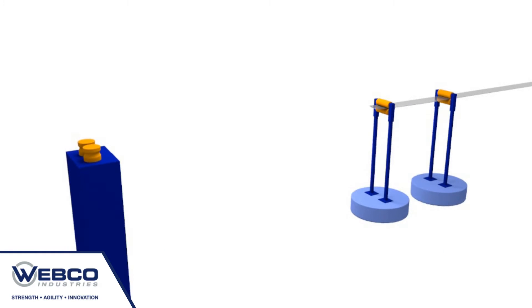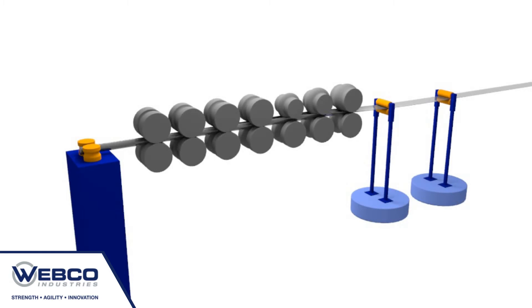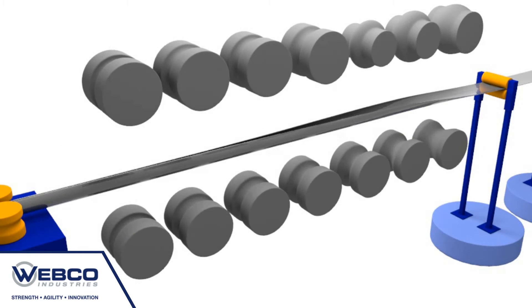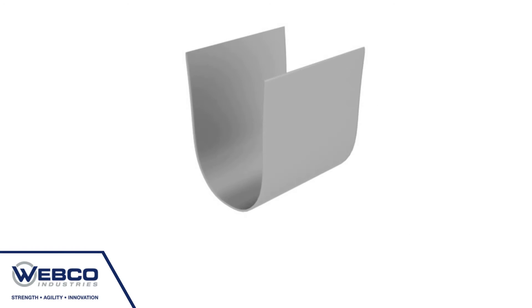Before welding the coil into tube, the skived steel strip is formed into a tube shape through a series of forming passes. The first set of breakdown passes form the strip into a U shape.